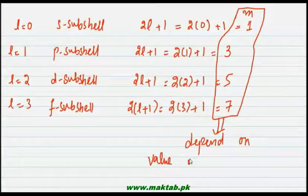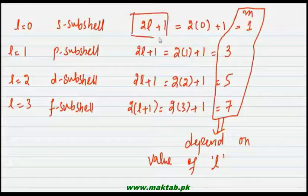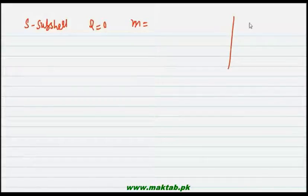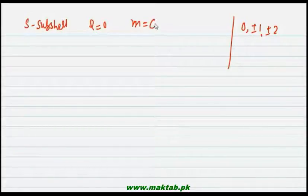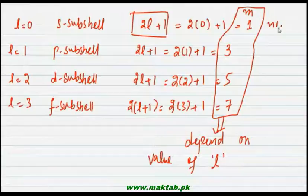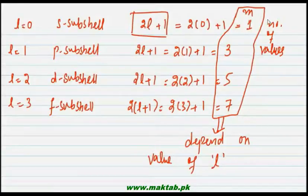So we have seen how the values of m depend on the value of l, the azimuthal quantum number. Now it is important to clarify: when l = 0 and we say m = 1, that 1 is not the value of m itself — it is the number of values m will have. The actual values of m start from 0, ±1, ±2, and so on.